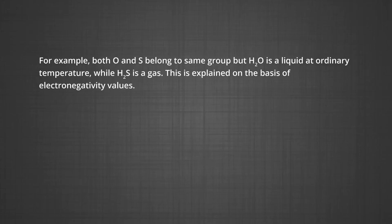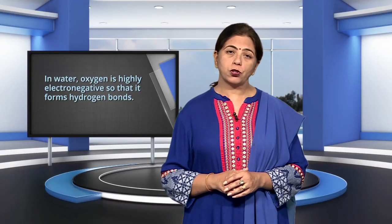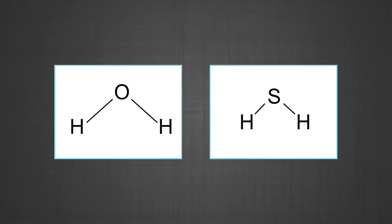In water, the electronegativity of oxygen is 3.5 and that of hydrogen is 2.1, so oxygen is highly electronegative and forms hydrogen bonds, causing water molecules to associate with one another, raising the boiling point and making water exist as a liquid at room temperature. On the other hand, the electronegativity difference in H₂S is less (sulfur electronegativity 2.5), and hydrogen bonding in H₂S is almost negligible, so H₂S is not associated and exists as a gas at room temperature.